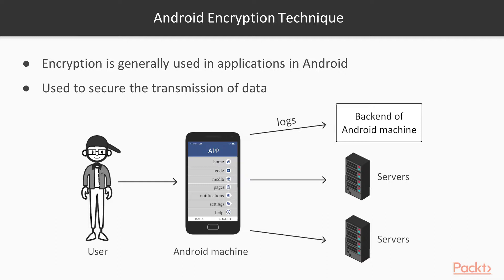Encryption is really important in apps. If there is no encryption available inside an application, it means that application is not secure. For example, if you are inserting your debit card details, the method should be encrypted. Without encryption, if you send any sensitive information, any attacker can easily perform sniffing or a man-in-the-middle attack to grab or steal the data and use it anywhere. That's why encryption is generally used in applications.